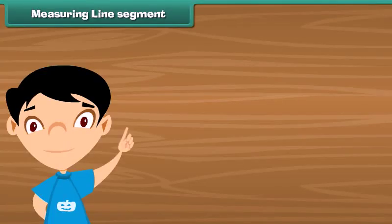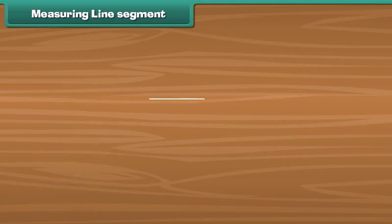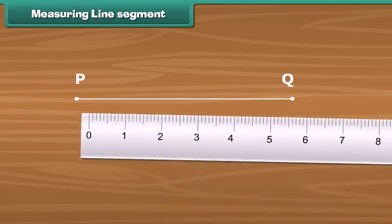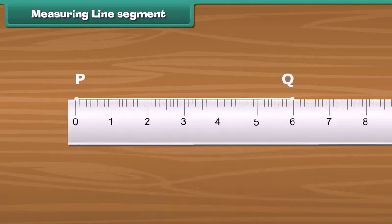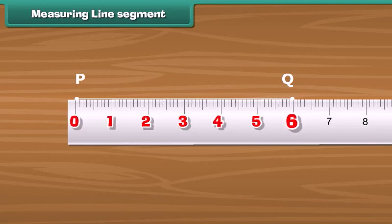Let us measure a line segment with the help of a centimeter scale. Draw a line segment with its end points as P and Q. Place the zero end of the scale exactly below point P. See where point Q lies on the scale — Q lies on number six. Between the numbers zero and six there are six centimeters, so the length of line segment PQ is six centimeters.